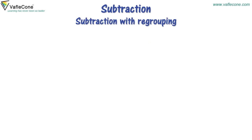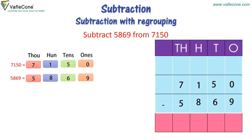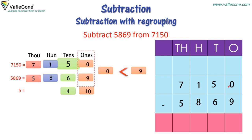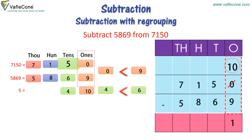Subtraction with regrouping. Subtract 5,869 from 7,150. Arranging the minuend and subtrahend as per their place value, we start subtracting from the 1's place. But the 1's place of the minuend, which is 0, is smaller than the 1's place of the subtrahend, which is 9. Now at the 10's place, the minuend has 5 tens, so we regroup as 4 tens and 10 ones. Now at the 10's place, 4 tens is smaller than 6 tens. At the 100's place, we regroup 1 hundred as 0 hundreds and 10 tens.